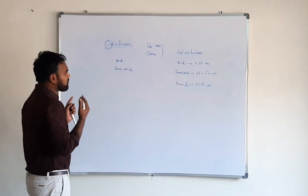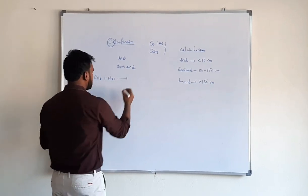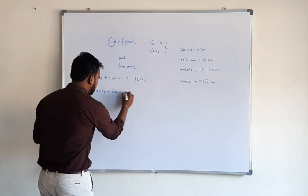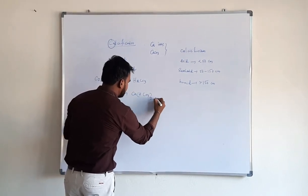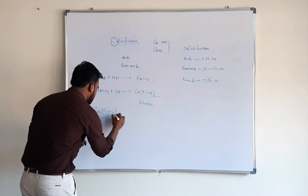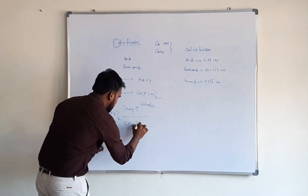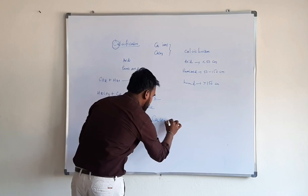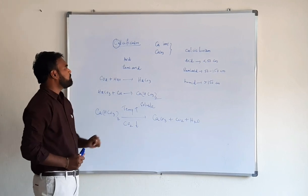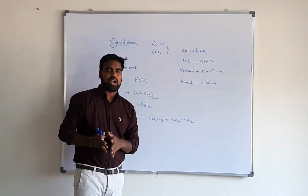The reaction for the calcification process: CO₂ + H₂O forms H₂CO₃ (carbonic acid). H₂CO₃ combines with calcium carbonate to form calcium bicarbonate, which is soluble. Under higher temperature and less carbon dioxide, calcium bicarbonate gives rise to calcium carbonate plus CO₂ plus H₂O. Calcification is the precipitation and accumulation of calcium ions or calcium carbonate in some part of the soil profile.